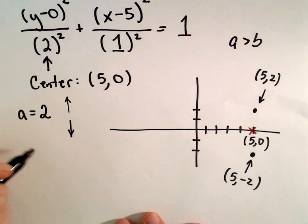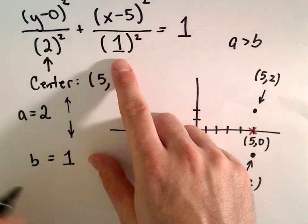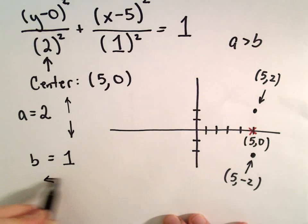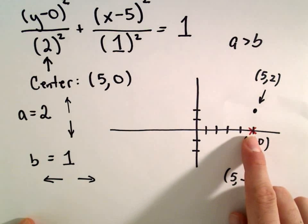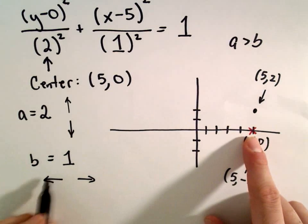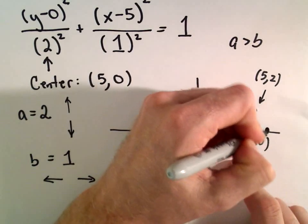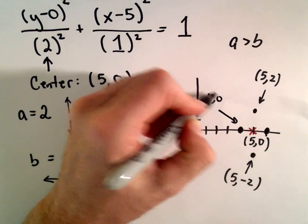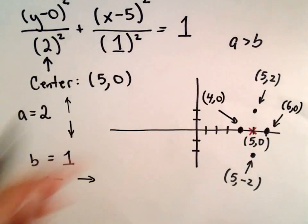Likewise, if we look at our b value, our b value is going to equal positive 1. That tells me how far I move left and right from where it's centered to get my co-vertices. So from the center, move left 1 unit. And then move right 1 unit as well. So the co-vertices will be at 4, 0 and also at 6, 0.